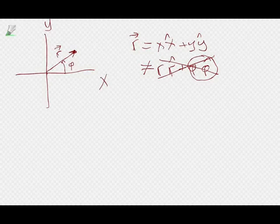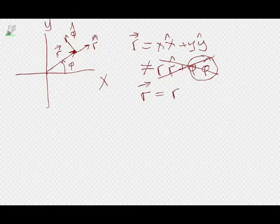However, r-vector is NOT equal to r r-hat plus phi phi-hat — that is wrong. You can see it's wrong because the phi-phi-hat term doesn't even have units of length, since phi is an angle and phi-hat is unitless. In fact, if you just look at it and draw r-hat and phi-hat, r-vector is simply r r-hat. That's the direction and distance from the origin, so r r-hat equals x x-hat plus y y-hat.